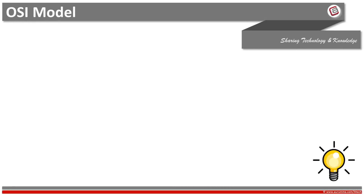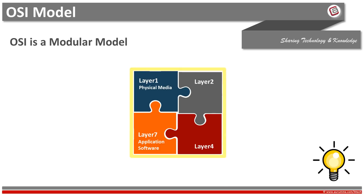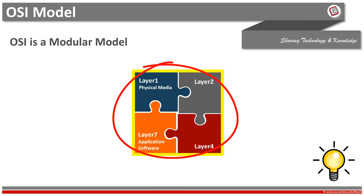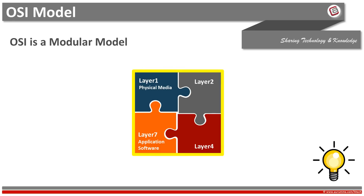OSI is easy to understand and implement due to its layered and modular approach. Different vendors, people, and teams can work together on different parts and combine them to form a system. One vendor can write software that implements higher layers, such as a web browser like Google Chrome or Firefox. Another vendor can write software for lower layers, like TCP/IP software by Microsoft in Windows 7 or Windows 10. In this way, Chrome can work on Windows 10, which was not possible without OSI.